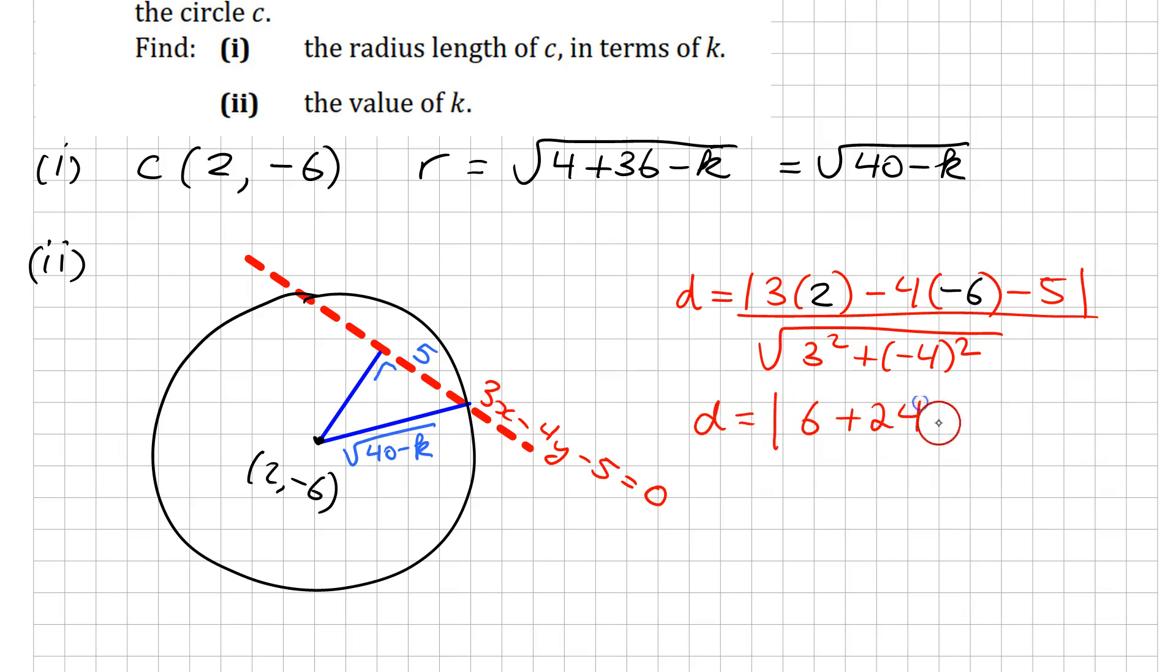So D is equal to 6 plus 24 minus 5 over the square root of 25, so D is equal to 25 over 5, so D is equal to 5.